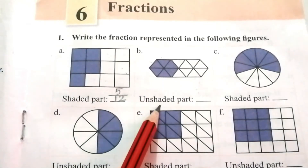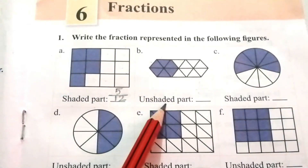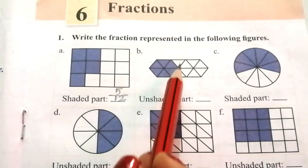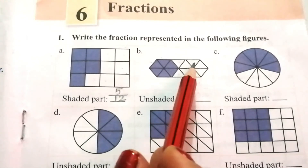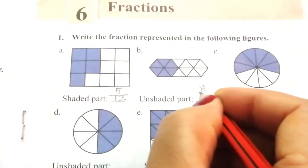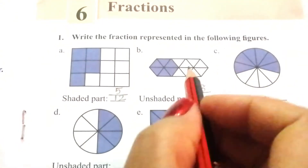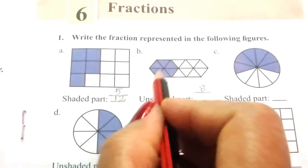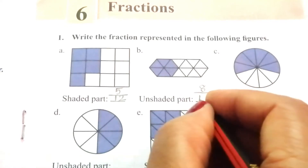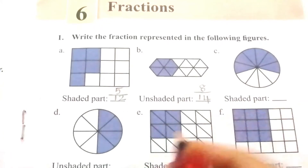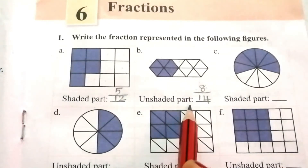Part B: we have to find the fraction for the unshaded part. First we count the unshaded parts: 1, 2, 3, 4, 5, 6, 7, 8. So 8 is the numerator. The total number of parts is 14. So 8 by 14 is the fraction for the unshaded part.